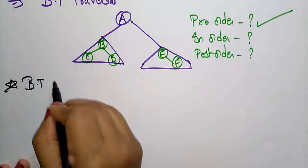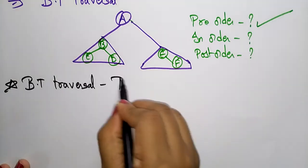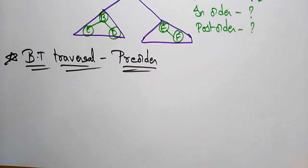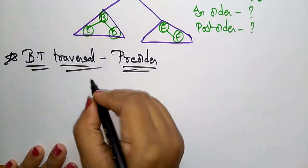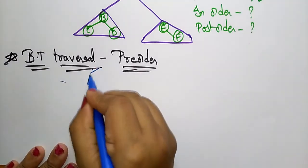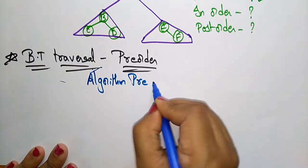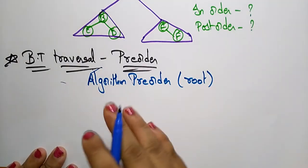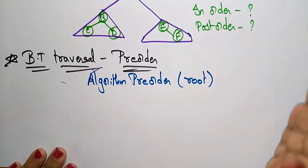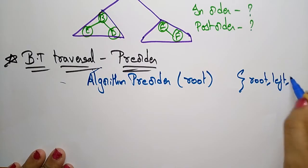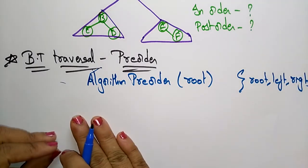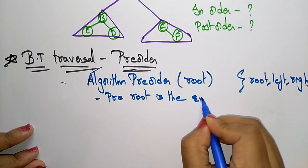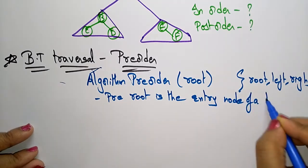Let me write the binary tree traversal — pre-order. First I'll write the algorithm, then explain with an example. The pre-order algorithm: 'pre' means we concentrate on the root first. The traversal of a binary tree in pre-order is root, left, right. So for pre-order, root is the entry node of the tree or a subtree.